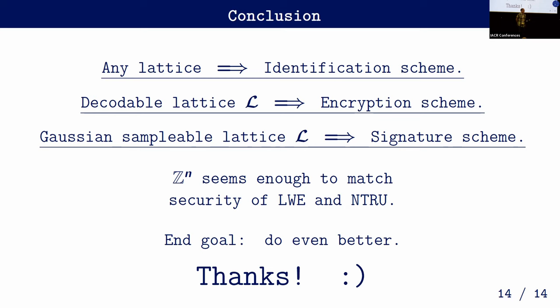Second question: you need a Gaussian-sampleable lattice to get a signature scheme, but any lattice gives an identification scheme. So the signature scheme doesn't use Fiat-Shamir? Using Fiat-Shamir you can get it from the identification scheme — that's the general way but not very efficient. If you really have a Gaussian-sampleable lattice then you can do a more competitive signature scheme.